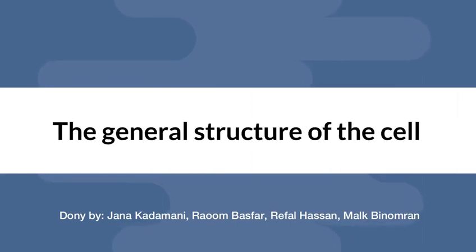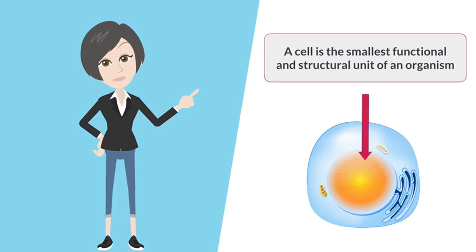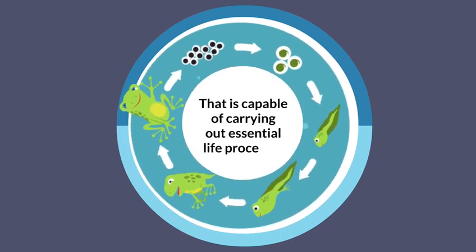The General Structure of the Cell. A cell is the smallest functional and structural unit of an organism that is capable of carrying out essential life processes.